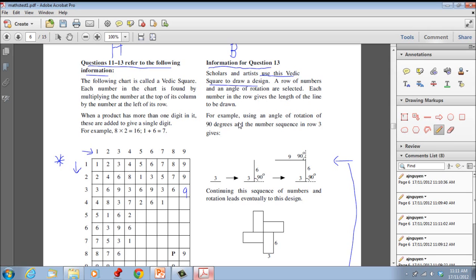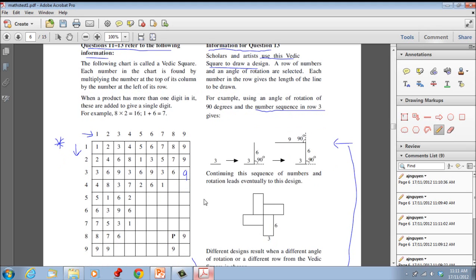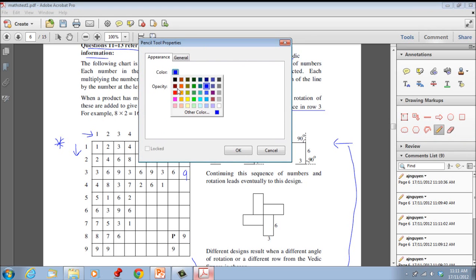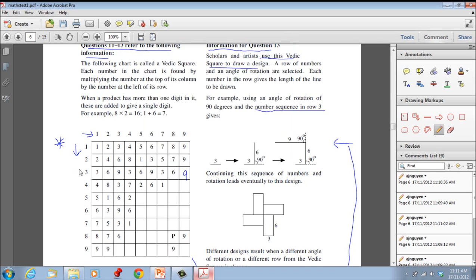For example, using an angle of rotation of 90 degrees and the number sequence in row 3. So there's that little clue to finding the answer. It gives 3, 6, and then 9. You can see row 3 is here. I'll change my pen color so you can see row 3 is here.